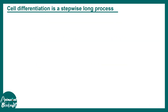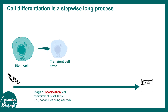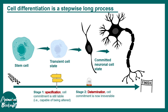Let us talk about cell differentiation in a bit more detail. Cell differentiation is a stepwise, long process. Imagine this is a stem cell — the starting point of the journey toward a differentiated cell. There could be transient cell states where the cell's fate is specified. Specification is a commitment step which is still liable, meaning alterations are possible. There is another stage called determination, which is irreversible commitment — the cell has to become what it should become, with no reversal. The terminally differentiated state in this example is the neuron.